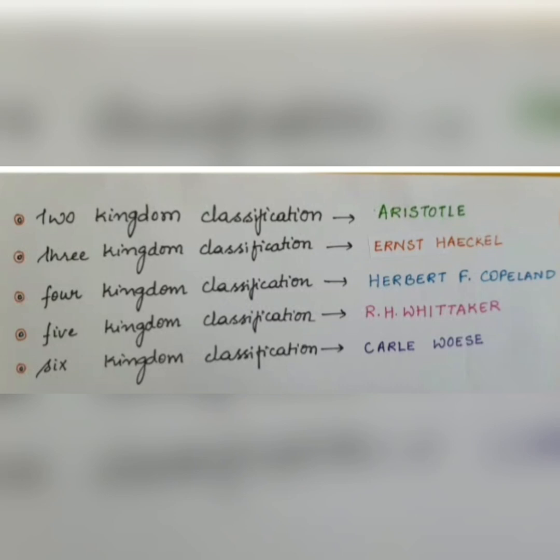Two kingdom classification was given by Aristotle, while three kingdom classification was given by Ernst Haeckel. Four kingdom classification was given by Herbert F. Copeland. Five kingdom classification was given by R.H. Whittaker, and lastly the six kingdom classification was given by Carl Woese.